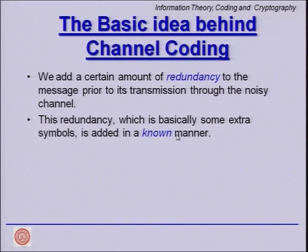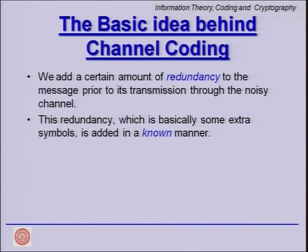We established last time that the basic idea behind channel coding is to add redundancy in a known manner. This known manner is critical — it is a mathematical method, it could be an algebraic structure or a geometric structure that we put in, so that both the transmitter and receiver know how the redundancy has been added, but noise does not know this.